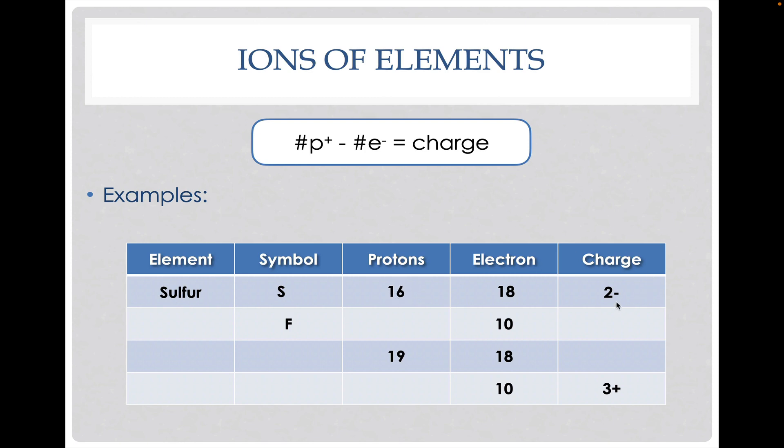So to get a negative two charge, we would take 16 minus 18 to give us negative two. In this case, fluorine, in the protons and electrons, we know that if there's 10 electrons, fluorine has to have nine protons in it based off it being atomic number nine. We get a negative one charge. You can follow that train of thought as you fill out these things. Anytime you know one of these things, you can solve for the other ones.